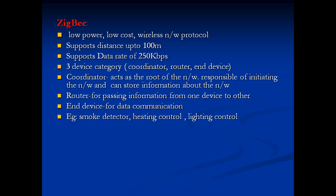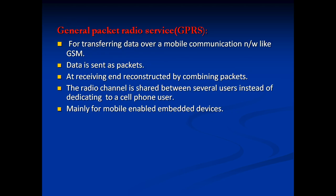ZigBee is a low-power, low-cost wireless network protocol that supports distances up to 100 meters and data rates of 250 kbps. It has three device categories: coordinator, routers, and end devices. The coordinator is the root of the network responsible for initiating the network and can store information. Routers pass information from one end device to another. End devices are for data communications. Examples include smoke detectors, heating controls, and lighting controls.